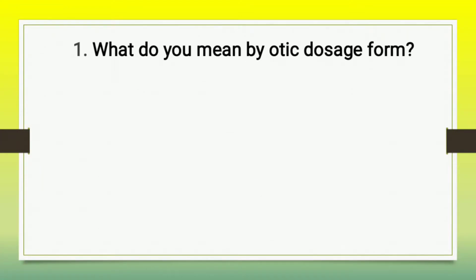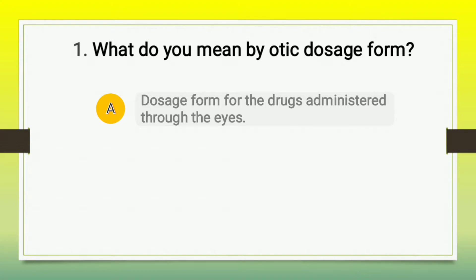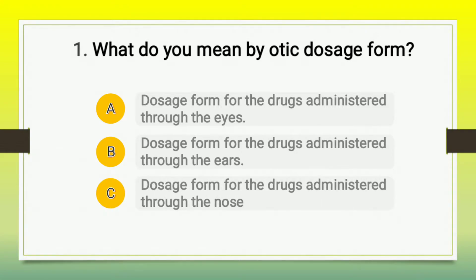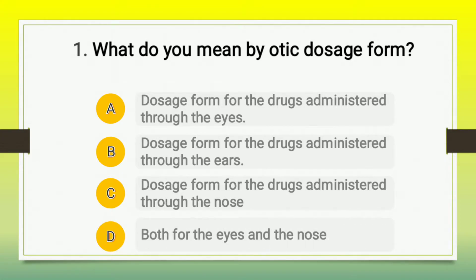Let's begin with the questions. The first question is: what do you mean by aortic dosage form? The options are: A) a dosage form for drug administration through the eyes, B) dosage form for drug administration through the ears, C) dosage form for drug administration through the nose, and D) both for the eyes and the nose. The right answer is option B — dosage form for drug administration through the ears.